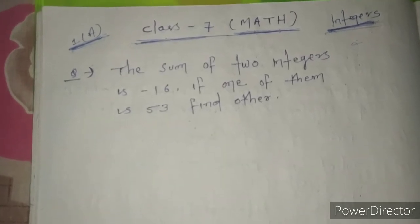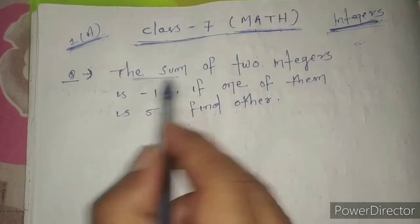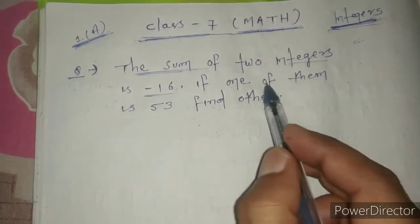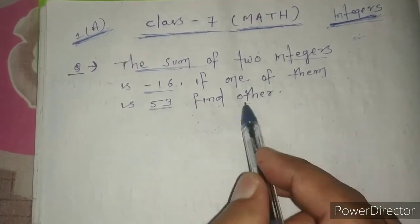So let us start. The first question is: the sum of two integers is minus 16. If one of them is 53, find the other.